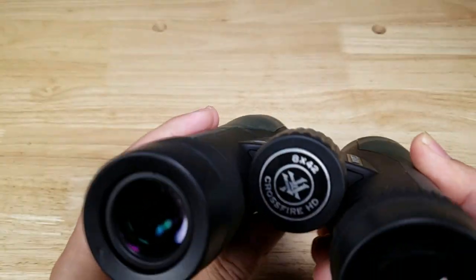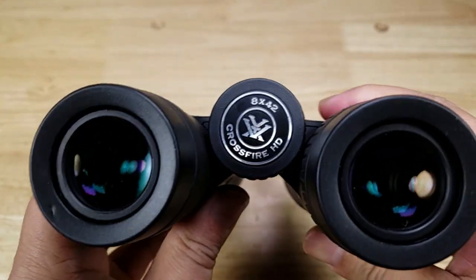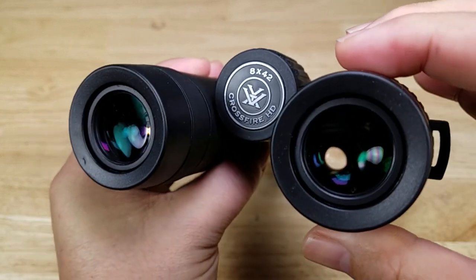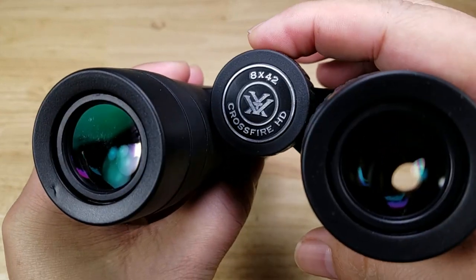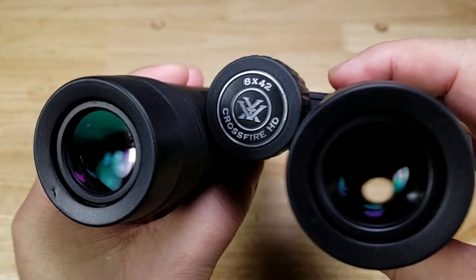Welcome back, thank you for watching another video. Today I want to show you what it looks like when you're looking through the lenses of a pair of binoculars that has 8x magnification and a 42 millimeter objective lens.